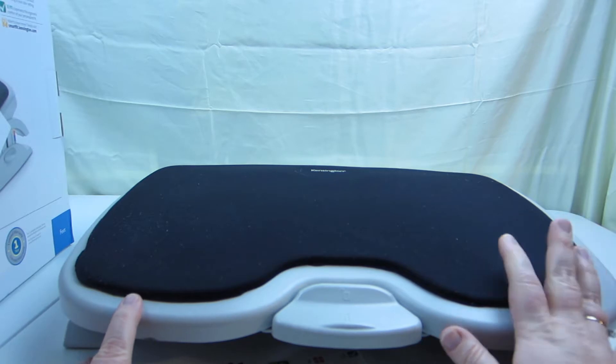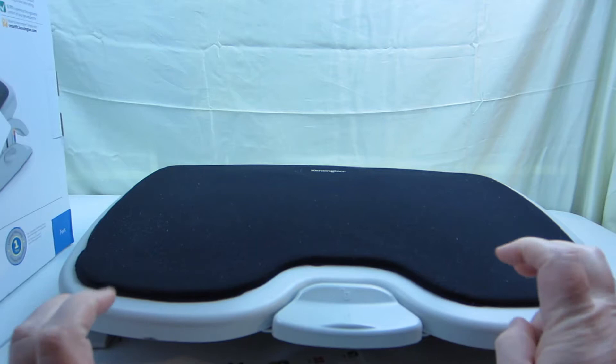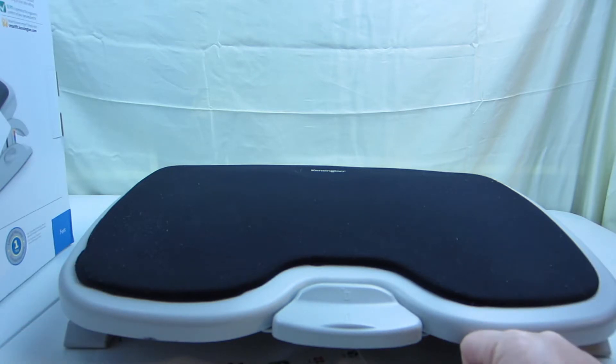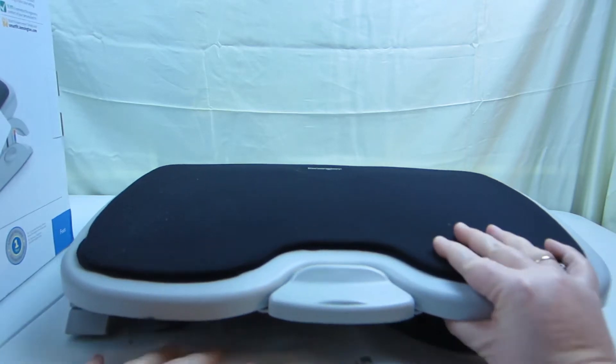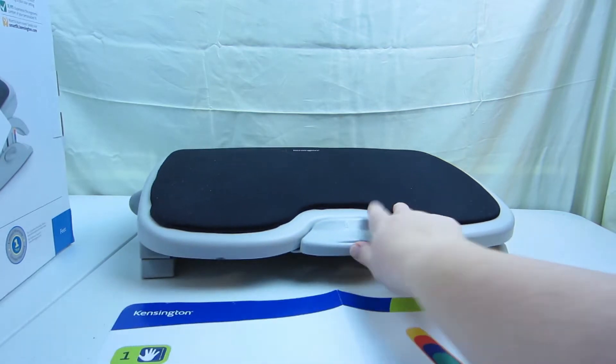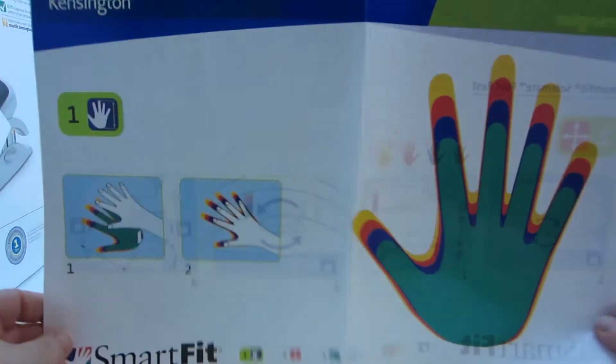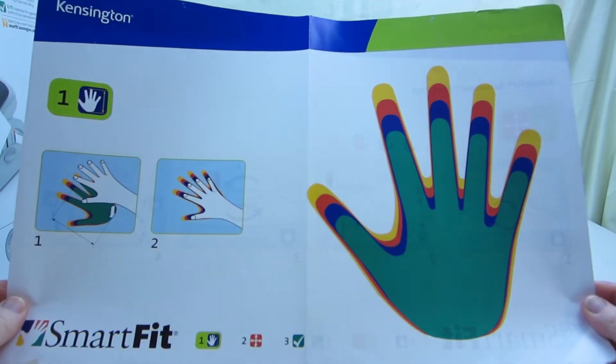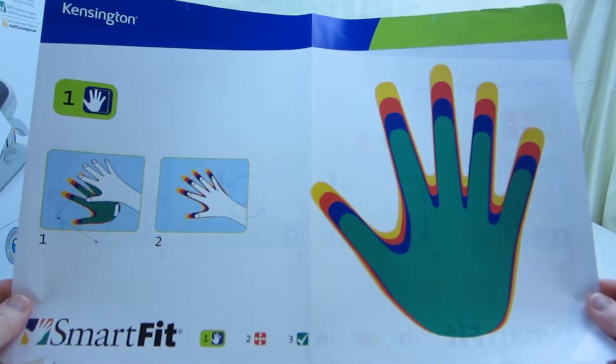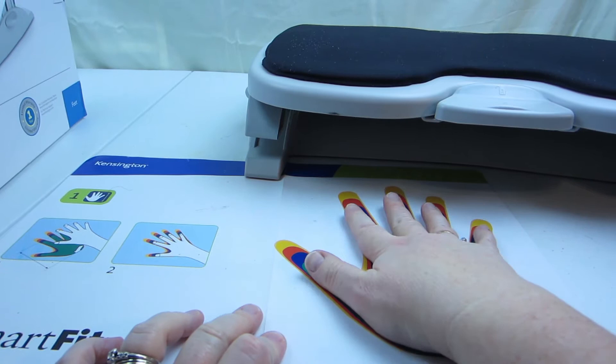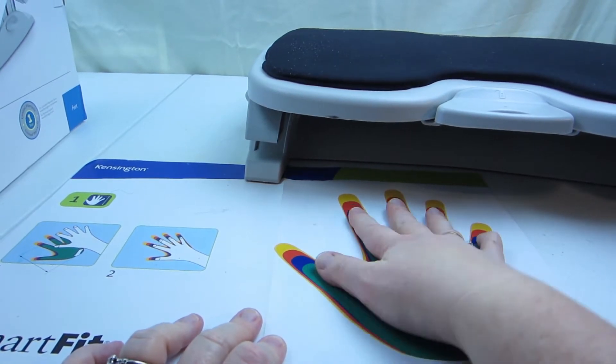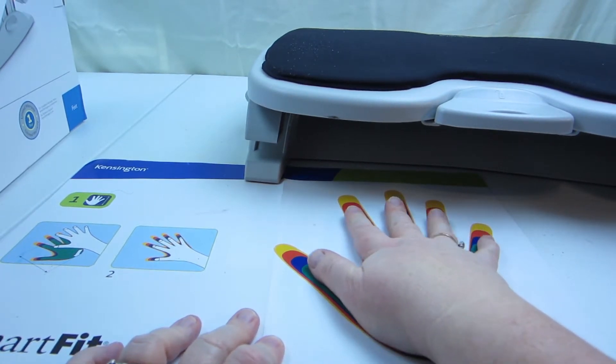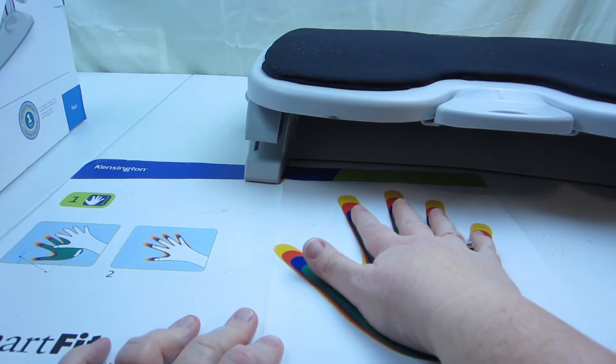Now this uses the SmartFit system, which actually helps you to find your personal comfort color and dial in ideal settings, is what the book says. What this means is they give you this little chart right here. You put your hand here and you see what color matches your hand best. Basically you put your hand here. I find that I'm basically a blue. So my fingers basically fit somewhere between the green and the blue.